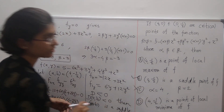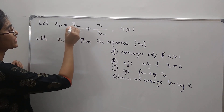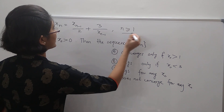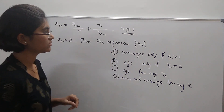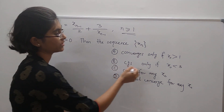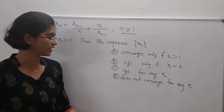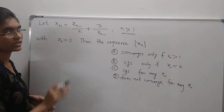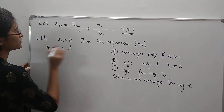Since D at (4, -1/2) is less than 0, this point is a saddle point. So the second option is correct. Let us solve another question. The question is: we have x_n = x_{n-1}/2 + 3/x_{n-1} for n ≥ 1 with x_0 > 0. Then the sequence x_n — does it converge only if x_0 > 1, converge only if x_0 < 3, converge for any x_0, or not converge for any x_0? Assume the sequence x_n converges to a limit L, so limit of x_n equals L.